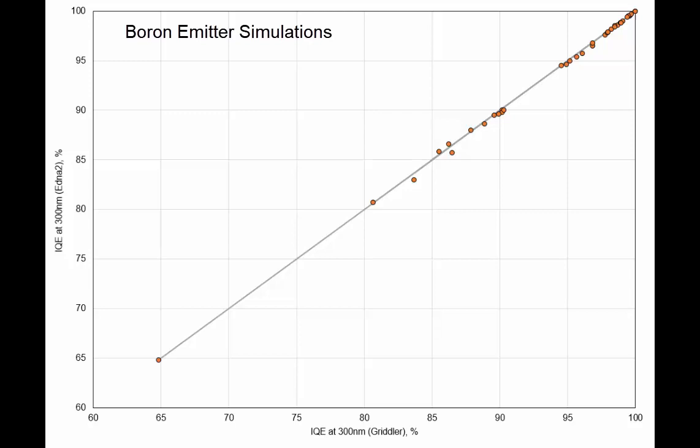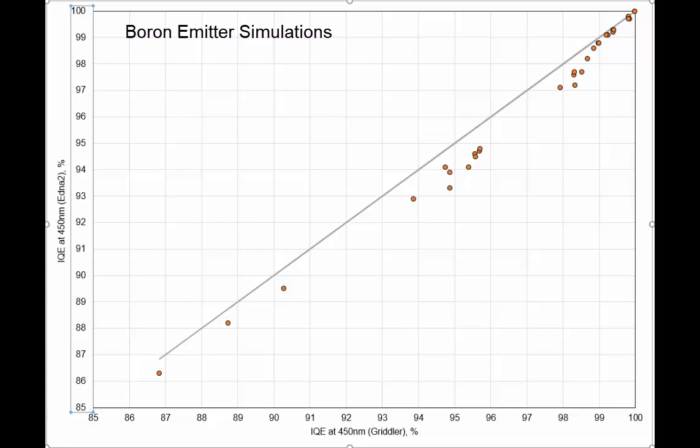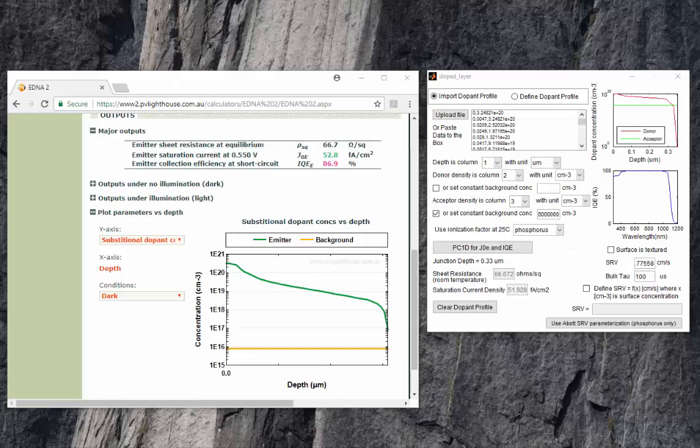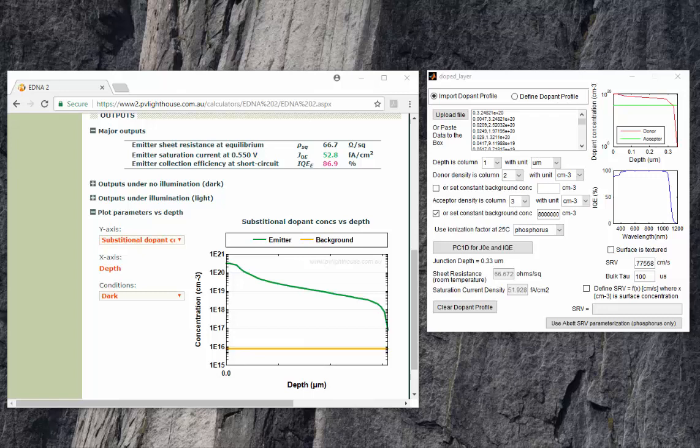IQE agreement is very good for boron. At 300 nanometer, the deviation is very small. Same thing for 350 nanometer. And even at 400 nanometer and 450, the agreement between the two simulators is doing better than phosphorus emitter profiles.